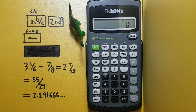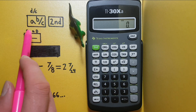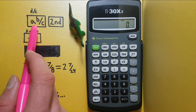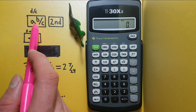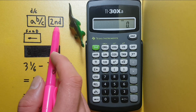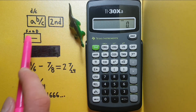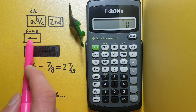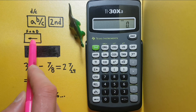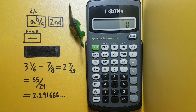To do this we will be using the A B over C button, the second function button, and the left arrow button.